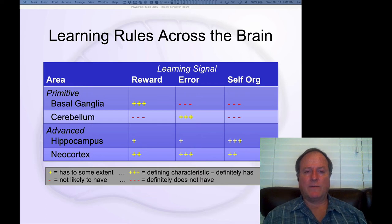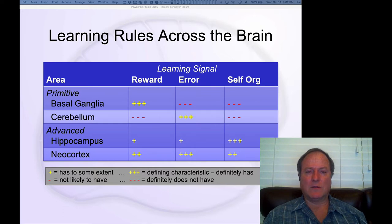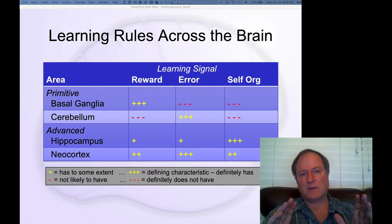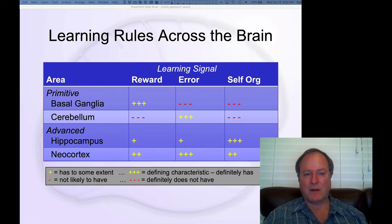Finally, we're going to do a few extra in-depth ideas about some of these different brain areas — a little extra dimensionality to what we just told as the overall story. This is a way of thinking about how the different brain areas sort out in terms of the kinds of learning that operate in these brain areas.